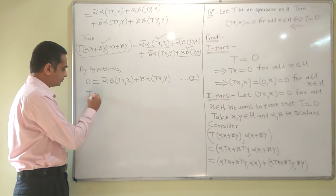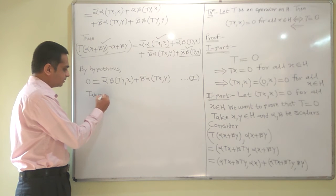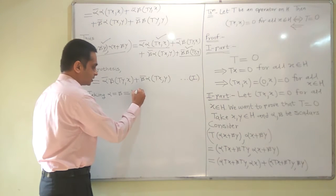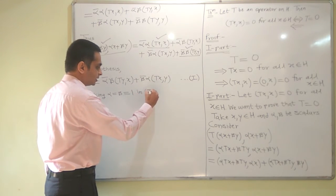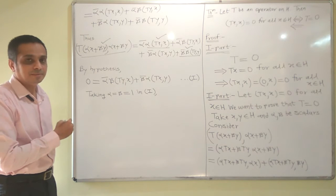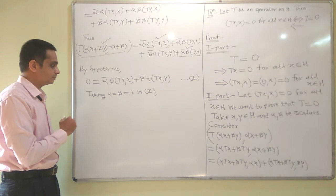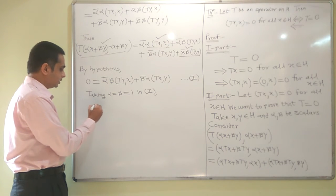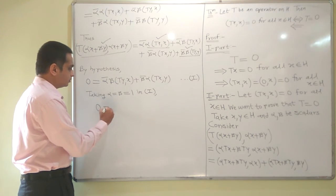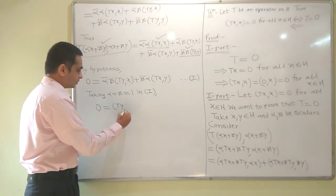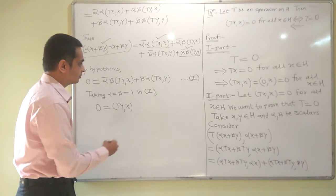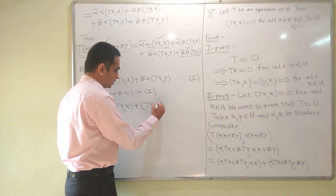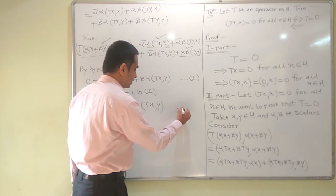Taking α = β = 1 in the first equation, we obtain the second equation: 0 = ⟨Ty, x⟩ + ⟨Tx, y⟩.